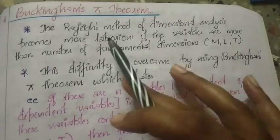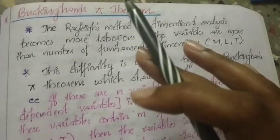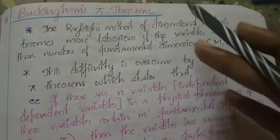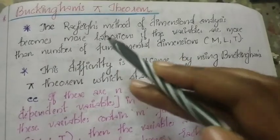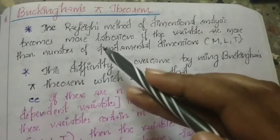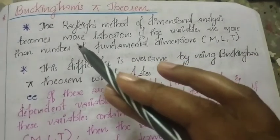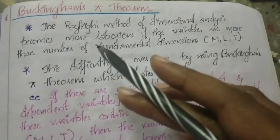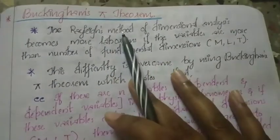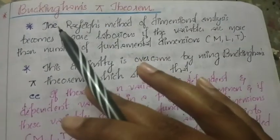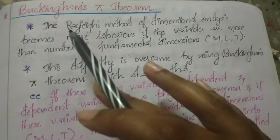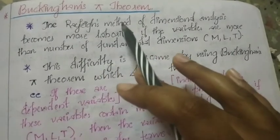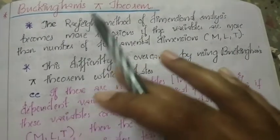We have two methods of Dimensional Analysis. The first method is Rayleigh's Method — we will learn problems on it. We will also discuss the second method: Buckingham's Pi theorem method.